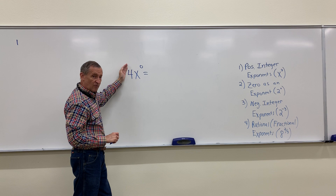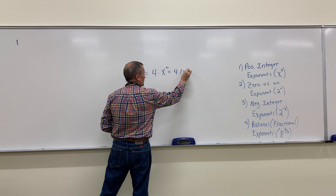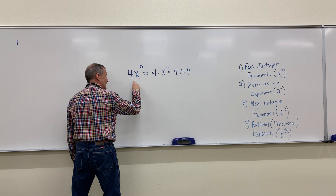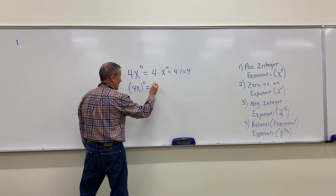In 4x^0, x is only to the zero power, then multiplied by four. So four times x to the zero power means x to the zero power is one, giving me four. Now please notice the difference between 4x^0 and (4x)^0. That one is going to be one, because it's any real number to the zero power. Change the base and you change the evaluation.